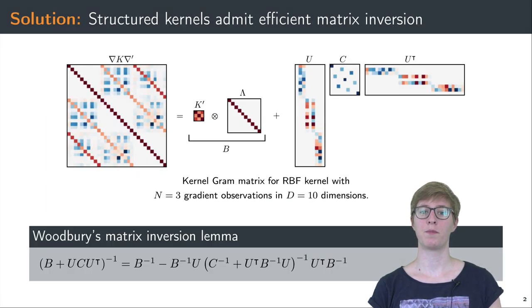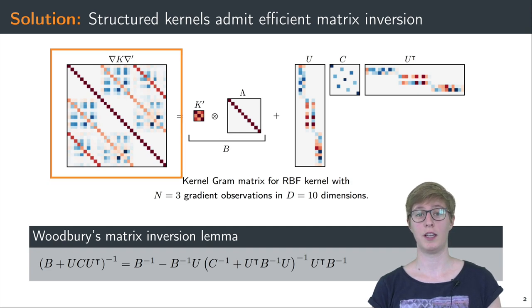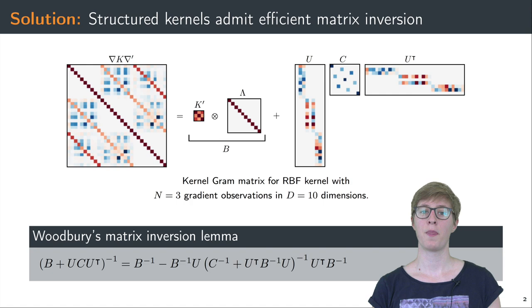Let's see how this works. It turns out that the kernel-gram matrix for gradients has a lot of structure for many popular kernels such as stationary or dot product kernels. On the left, you see such a clearly structured matrix for 3 gradient observations in 10 dimensions using the RBF kernel. The structure originates from applying the product rule of differentiation on the kernel. On the right is the same matrix decomposed into its constituents.